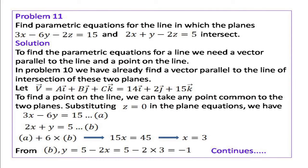Another problem: Find the parametric equations for the line in which the planes 3x minus 6y minus 2z equal to 15 and 2x plus y minus 2z equal to 5 intersect. To find the parametric equation of the line, we need two things: a point on the line and a vector parallel to the line. In the previous problem, we already found the vector parallel to the line of intersection, which is vector v equal to ai plus bj plus ck equal to 14i plus 2j plus 15k.